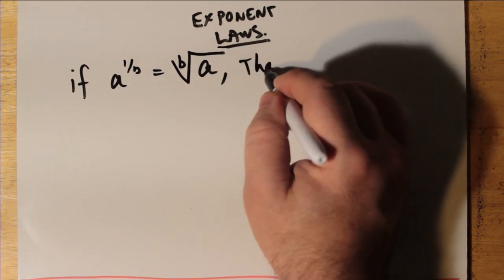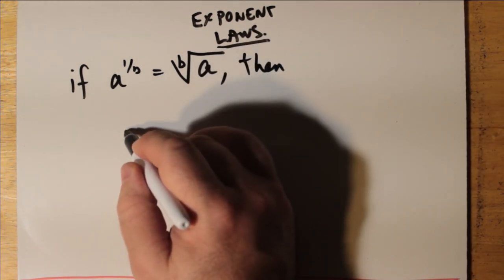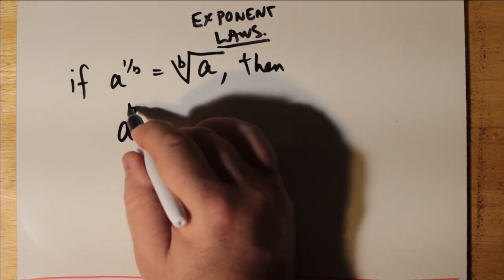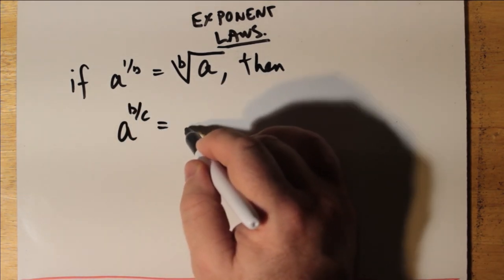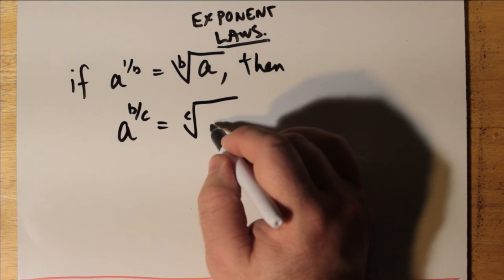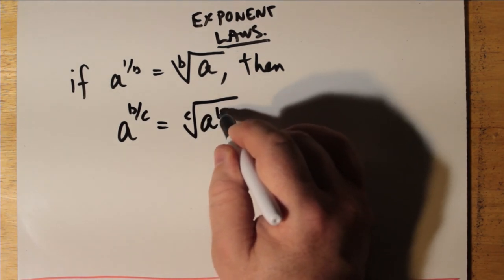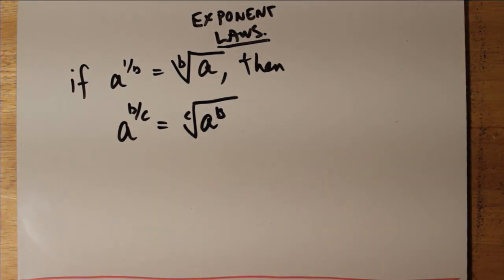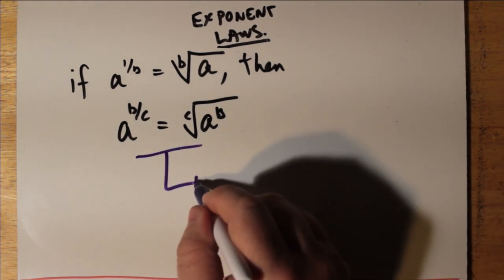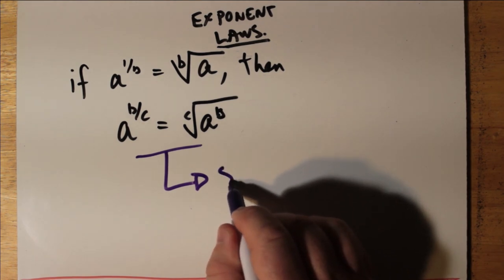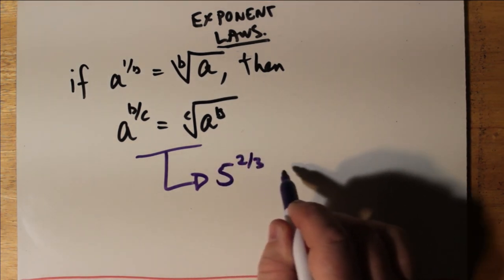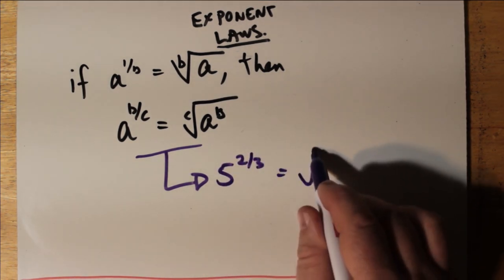If you remember from last time, a to the 1 over b is the bth root of a. So if that's true, well then, what about a to the b over c? We kind of alluded to that earlier. It turns out that a to the b over c is the cth root of a to the b. To take a specific example, let's say we have 5 to the 2 thirds. That's the cube root of 5 squared.